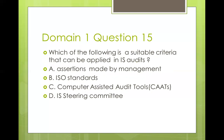Question fifteen: which of the following is a suitable criteria that can be applied in IS audits? Options: assertions made by management, ISO standards, COBIT, or IT Steering Committee. A criteria is a benchmark or standard against which you measure what you've found in an audit to determine compliance. Management assertions are not a criteria. ISO standards are — for example, ISO 22301 for business continuity, ISO 27001 for information security management, and ISO 20000 for IT service management. So the best answer is B — ISO standards.